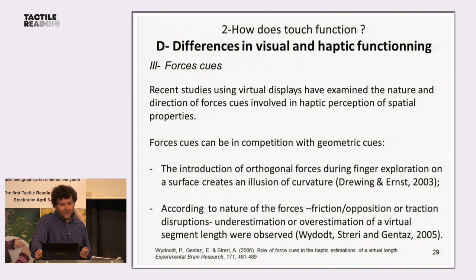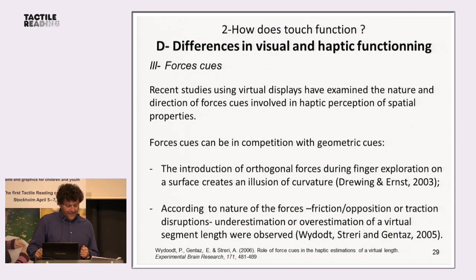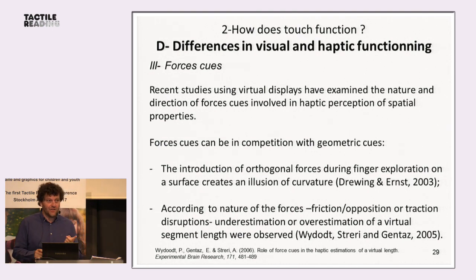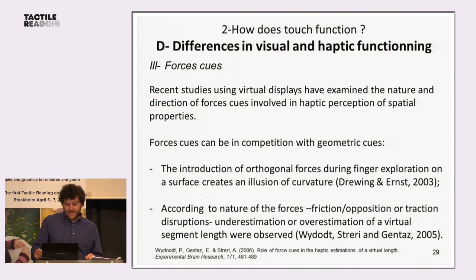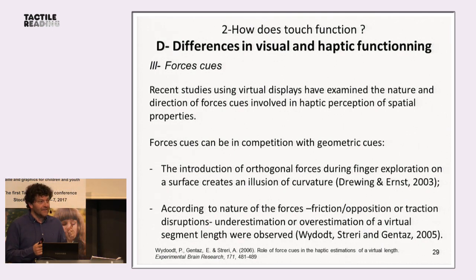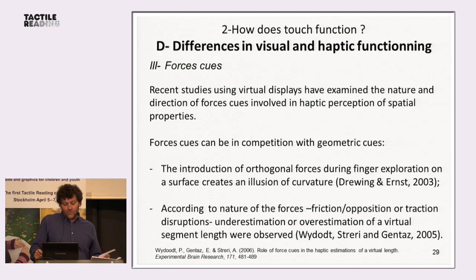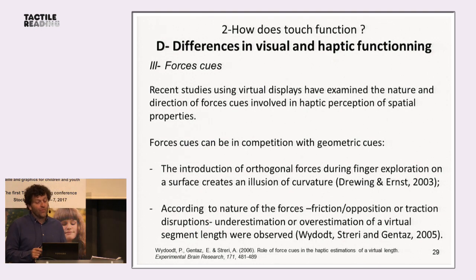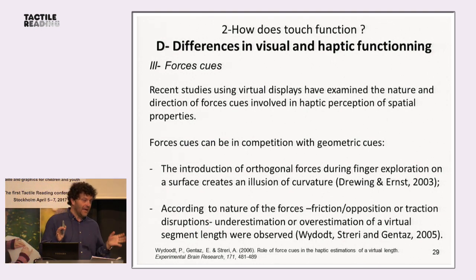Recent studies using a virtual display have examined the nature and direction of force cues involved in haptic perception of spatial properties. Force cues can compete with geometric cues. For example, introduction of orthogonal forces during finger exploration of a surface creates an illusion of curvature. We show that according to the nature of force cues introduced during exploratory movement — friction opposition or traction disruption — underestimation or overestimation of a virtual segment length was observed.